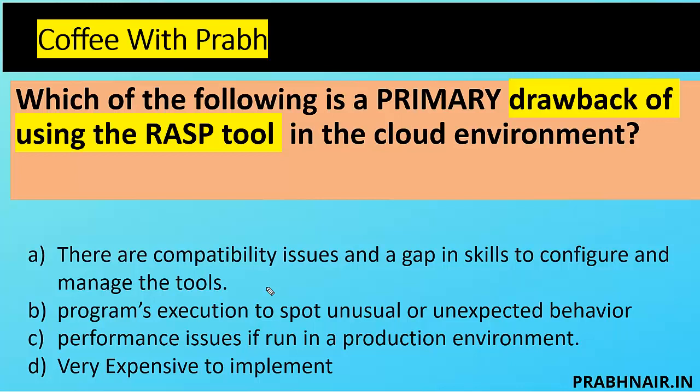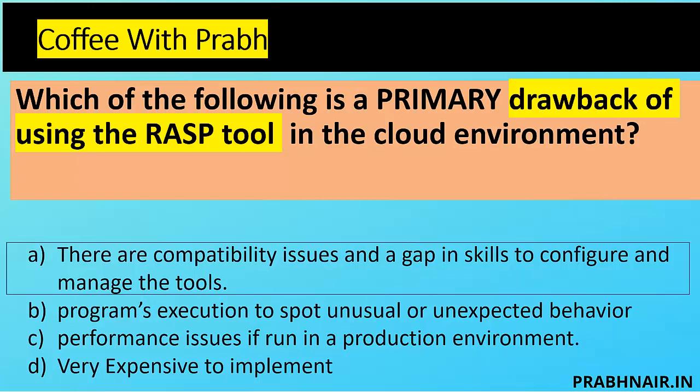Option B — program execution to spot unusual or unexpected behavior — is not a drawback, it is an advantage of RASP; anything exceeding a threshold gets flagged. Option C — performance issues if run in a production environment — is true but manageable, and we never test in production. Option D — very expensive to implement — cannot be a primary drawback because there are several open-source tools available. The major concern when integrating RASP is the compatibility issue, so the answer is A.